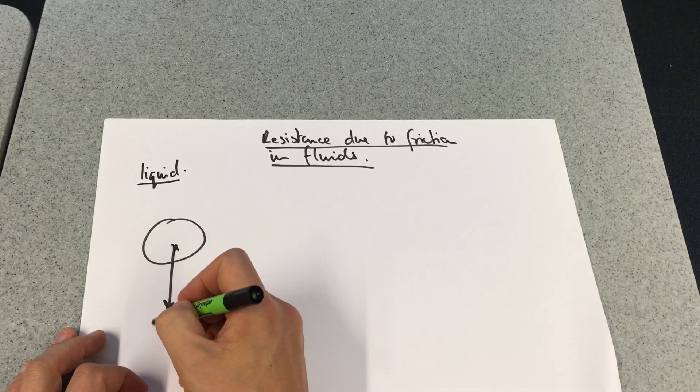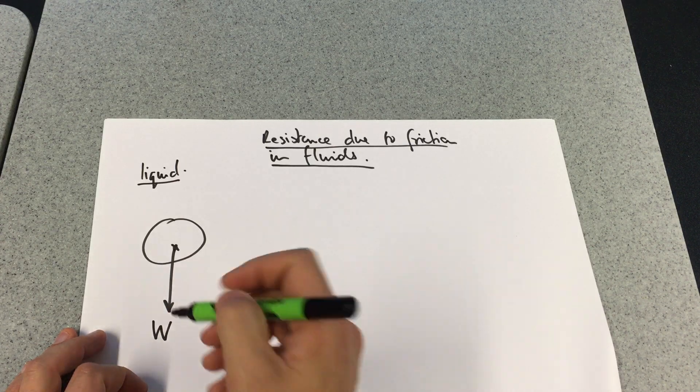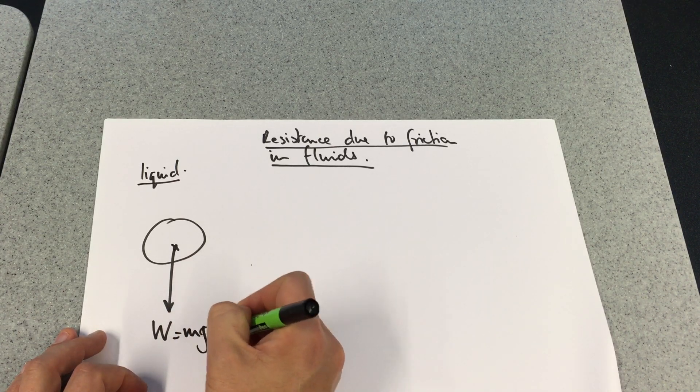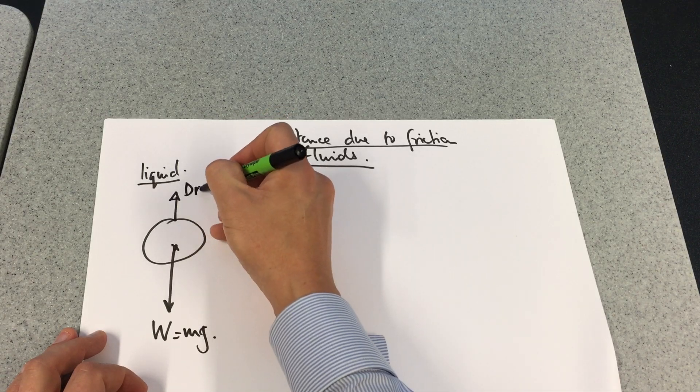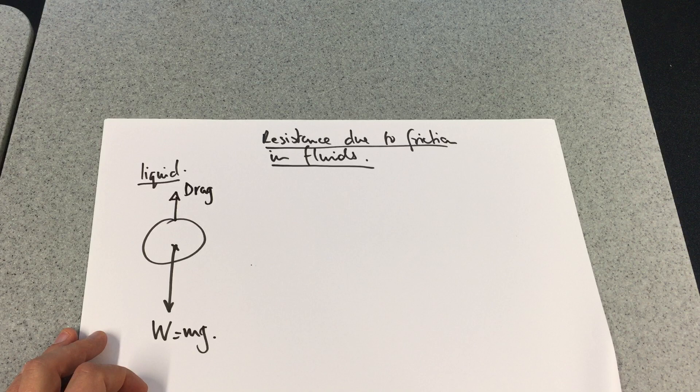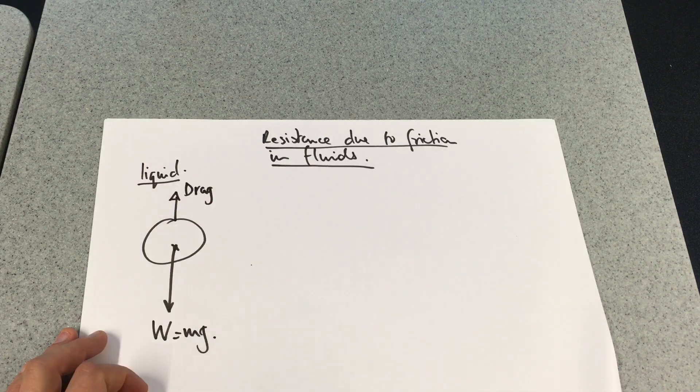When an object falls through liquid, it has a weight associated with it, which we're familiar with, mg, and it also has a drag force that's pulling it back. We're going to quantify this force in this video.